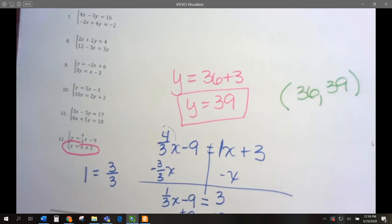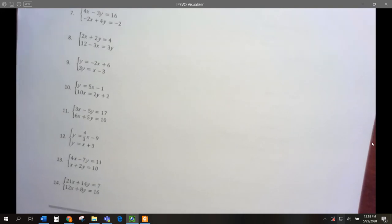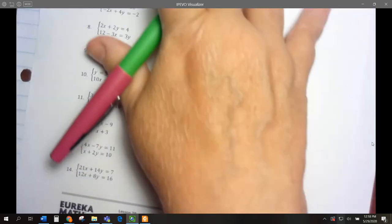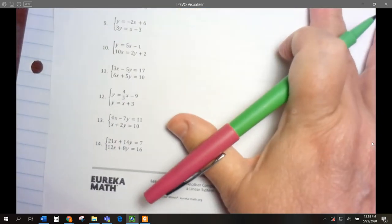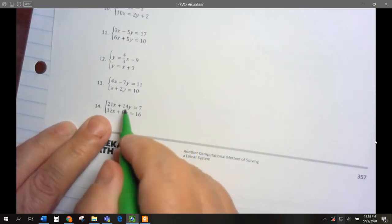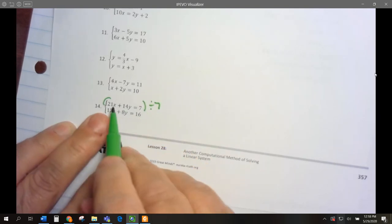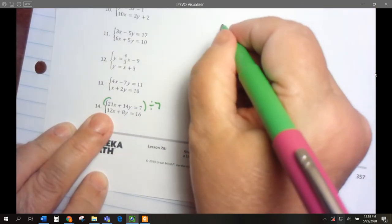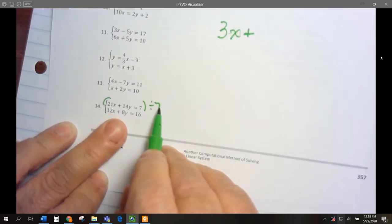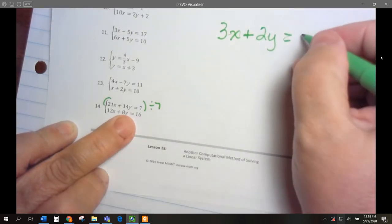We're going to go on to our last problem for today, number 14. These both look like they can be simplified, they're kind of big numbers. Let's simplify to smaller numbers. Let's divide everything here by 7. 21 divided by 7 would be 3x plus 14 divided by 7 would be 2y, and 7 divided by 7 would be 1.